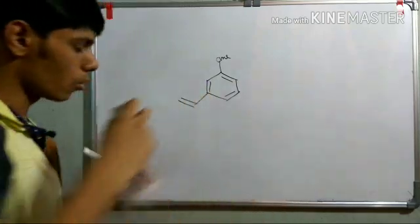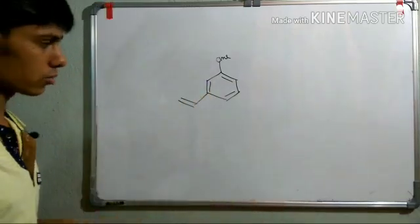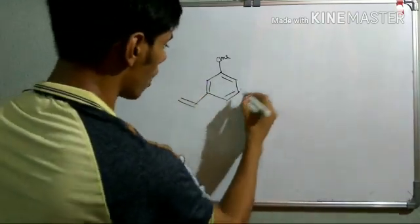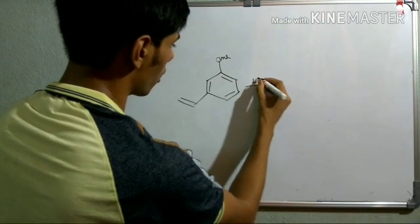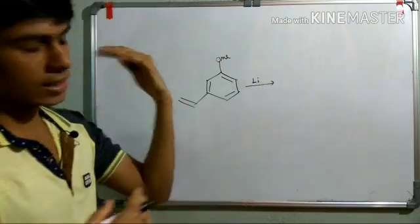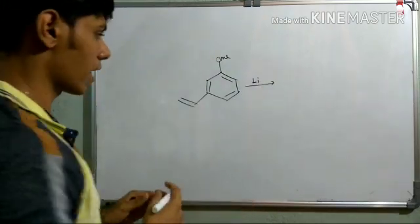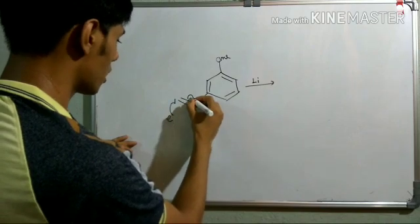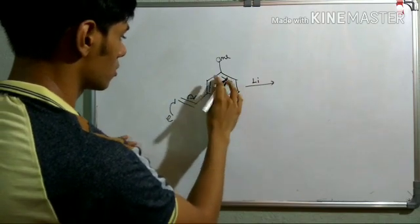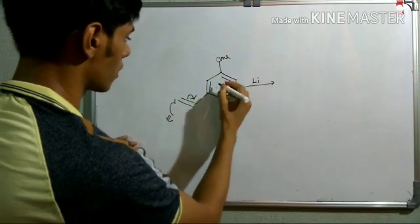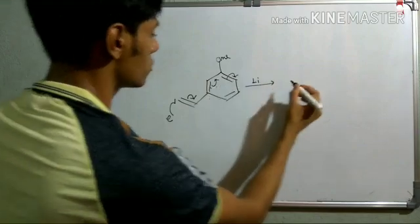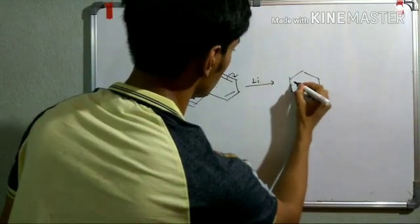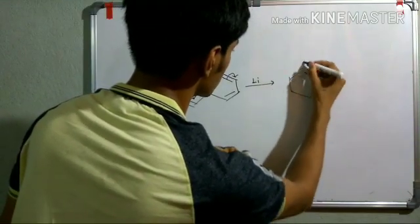This is the first compound — the starting material. Lithium is present in the reaction medium, so it will donate an electron here. First of all, this radical anion will form, as you can see.